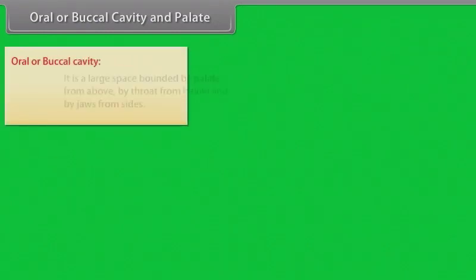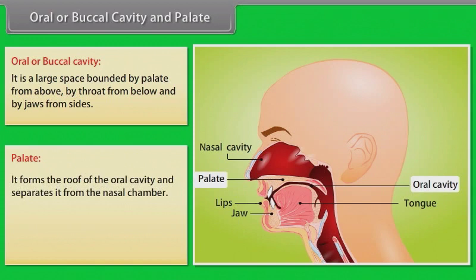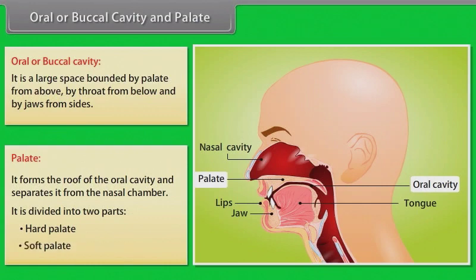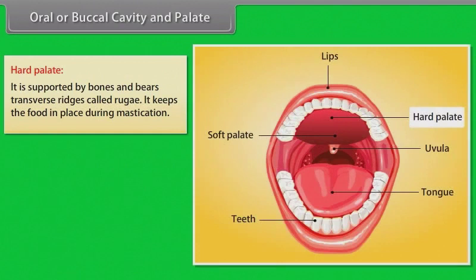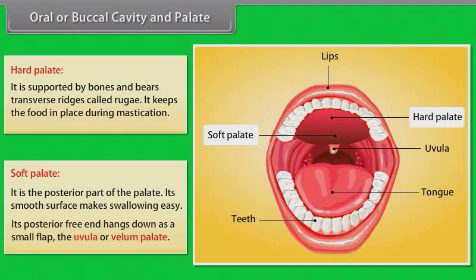The oral or buccal cavity is a large space bounded by the palate from above, by the throat from below, and by the jaws from the sides. The palate forms the roof of the oral cavity and separates it from the nasal chamber. It is divided into two parts: the hard palate, supported by bones and bearing transverse ridges called rugae which keep food in place during mastication; and the soft palate, the posterior part, whose smooth surface makes swallowing easy. Its posterior free end hangs down as a small flap called the uvula or velum palate.